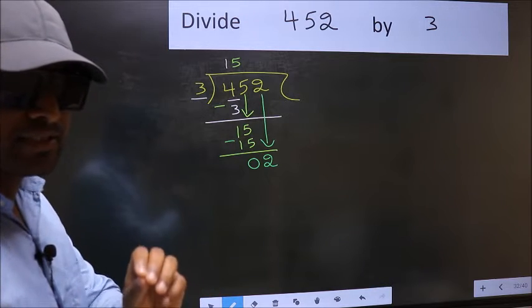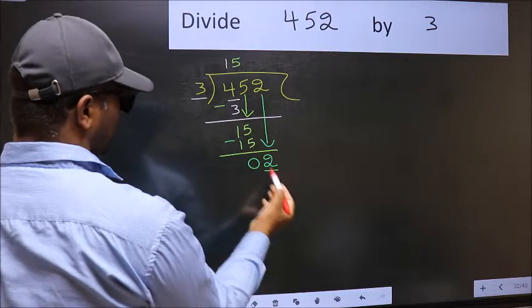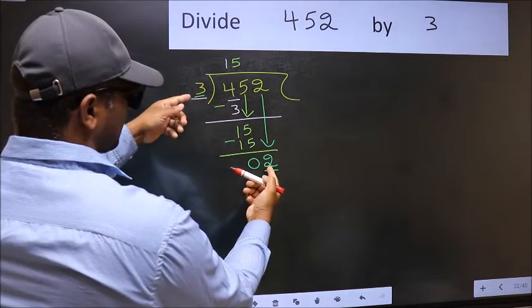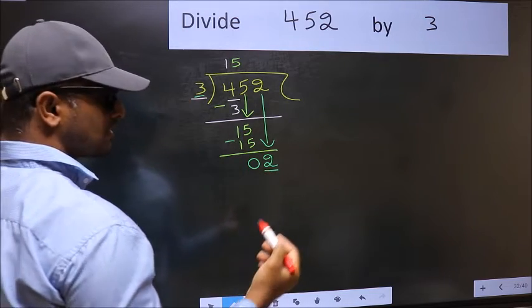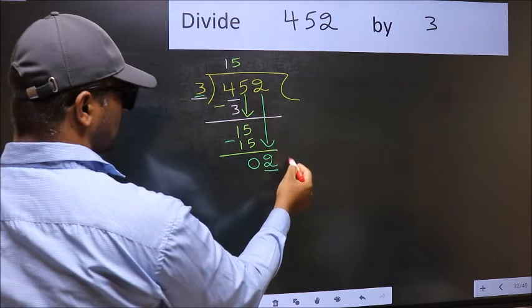And the mistake is this. Here we have 2 and here 3. 2 is smaller than 3. So what many do is they directly put a dot and take 0 here.